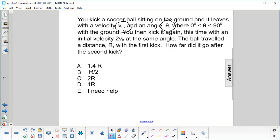The ball traveled a distance R with the first kick. How far did it go after the second kick? Well, the range formula, and we'll write range here, which is x, how far you go before you hit the ground again, that's equal to v0 squared sine of 2 theta all over g.